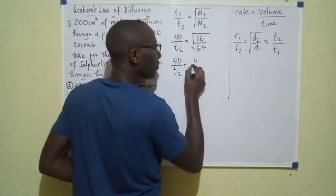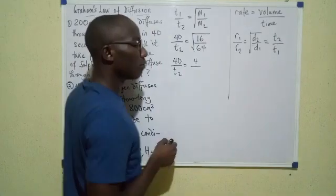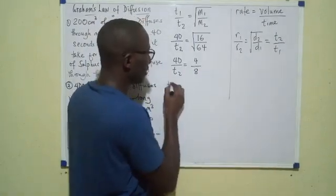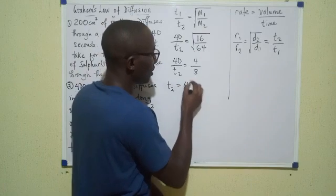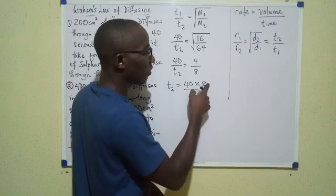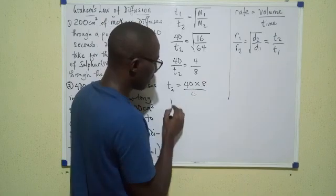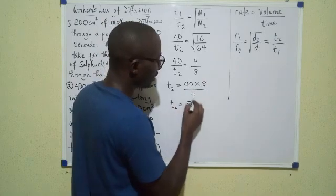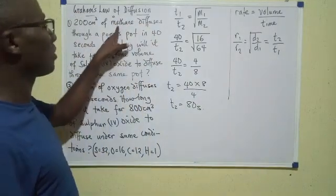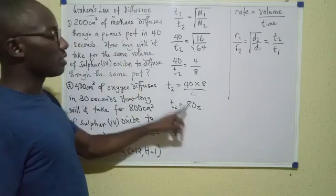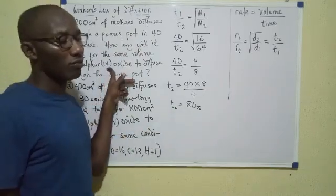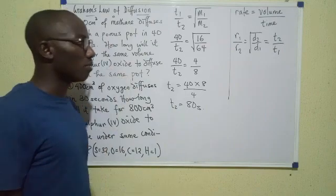So 40 over t2 equals the square root of 16 is 4, and for 64 we have 8. So t2 becomes 40 times 8 over 4, which simplifies to 80 seconds. So while it takes 40 seconds for methane, it takes 80 seconds for sulfur(IV) oxide. That's the simple solution to the first question.